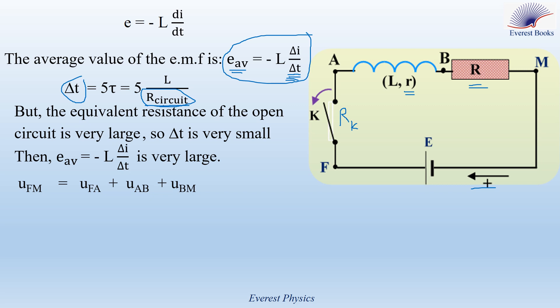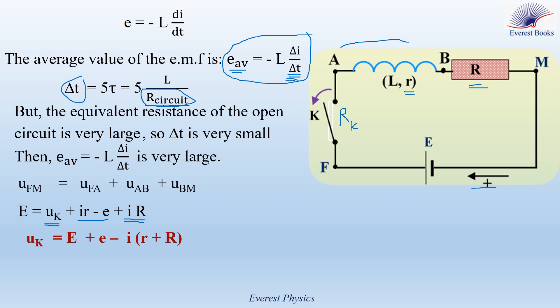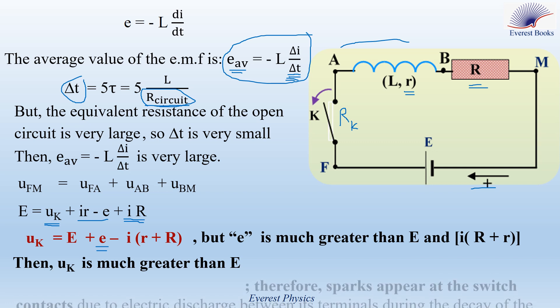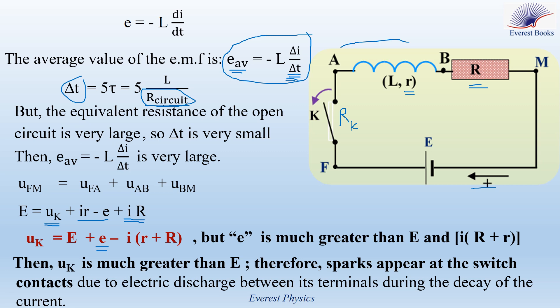U_fm equals E, the voltage across the ideal battery. U_fa is the voltage across the switch, U_K. U_ab is the voltage across the coil; following the positive sense, it is IR minus E_induced. The voltage across the resistor of resistance R is plus RI. So U_K equals E plus E_induced minus I(R + r). But E_induced is very large, so the voltage across the switch is much greater than E. Therefore, sparks appear at the switch contacts due to electric discharge between its terminals during the decay of the current.